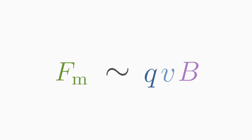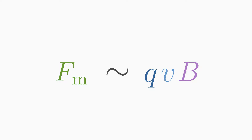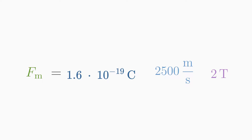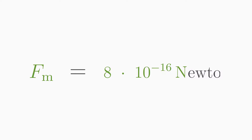So we can write down a formula for the Lorentz force: F is equal to Q times V times B. If you know the charge Q, the velocity V, and the homogeneous magnetic field B — which is perpendicular to the direction of velocity — then you can calculate the value of the Lorentz force. By the way, Lorentz force has the unit Newton.